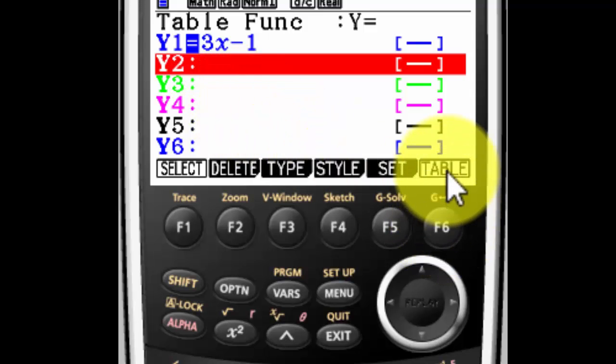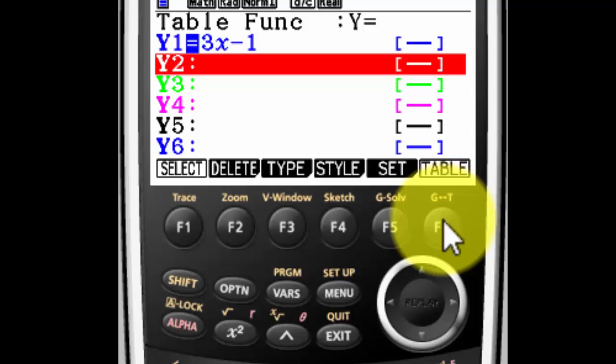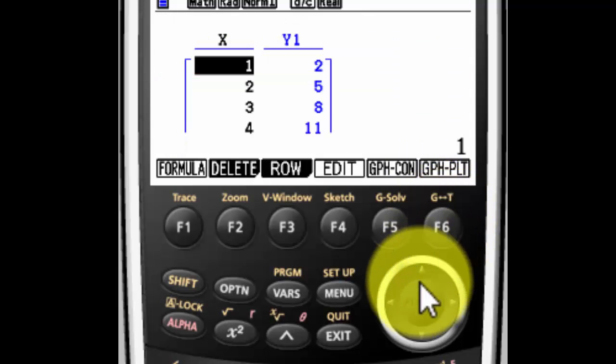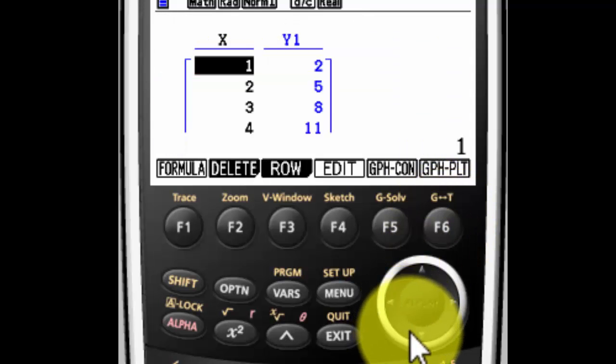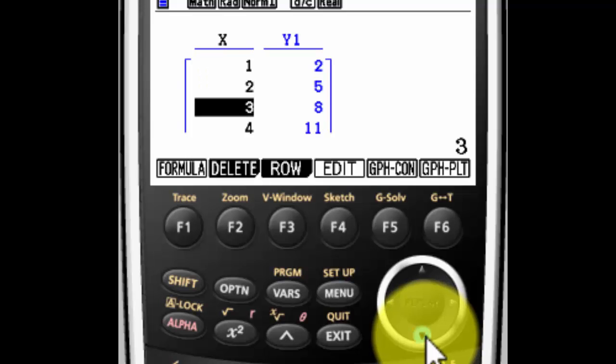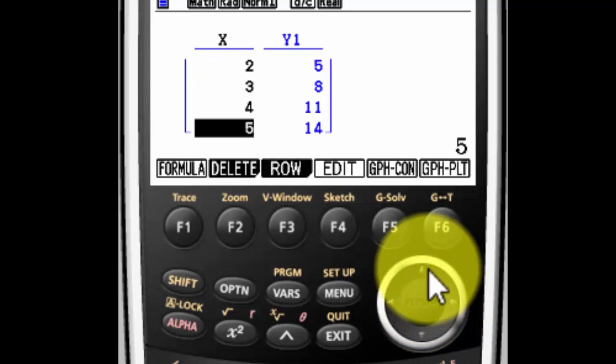I'm going to hit table right here. F6 is table. This is not a touch screen, so you actually have to press the key underneath it. And there's my table. It says when x is 1, y is 2, and it goes all the way down in increments of 1 all the way to 5.